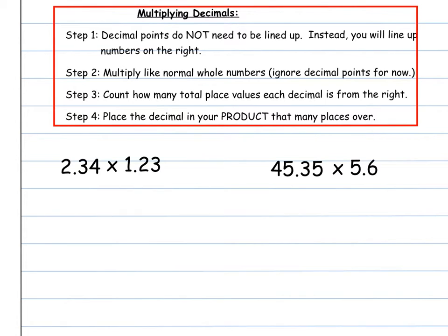This is going to be a little bit different than adding and subtracting. When we added and subtracted, we lined up the decimals one on top of the other. With multiplying, we're going to line them up on the right.